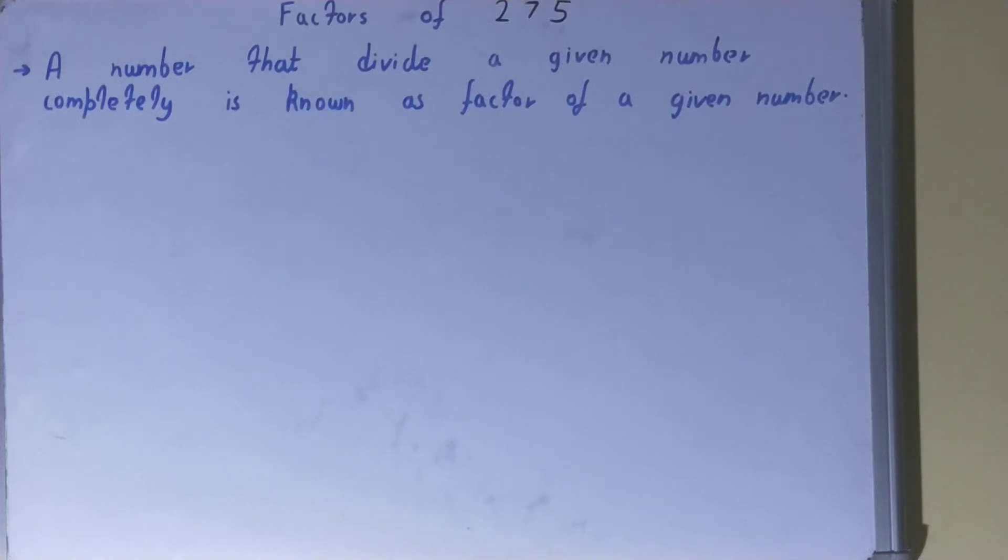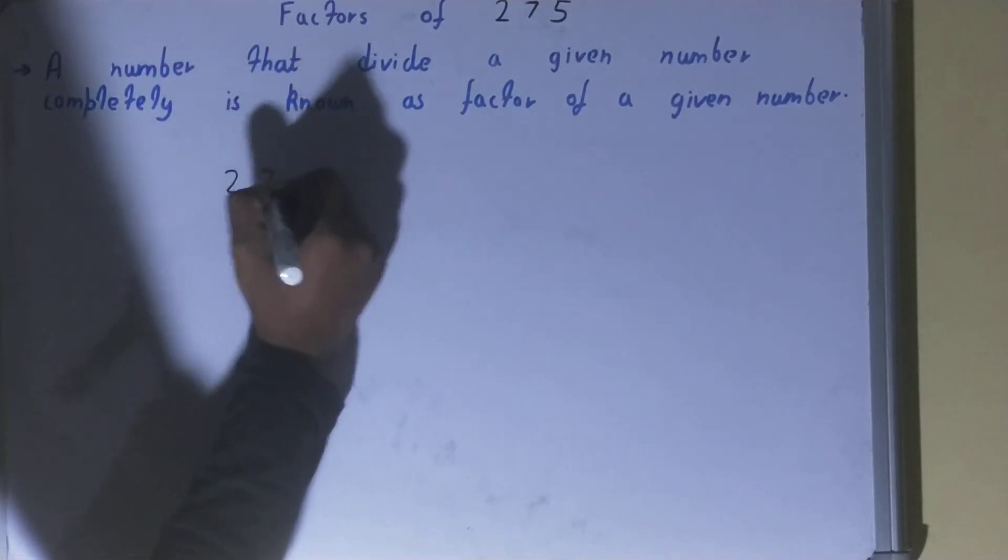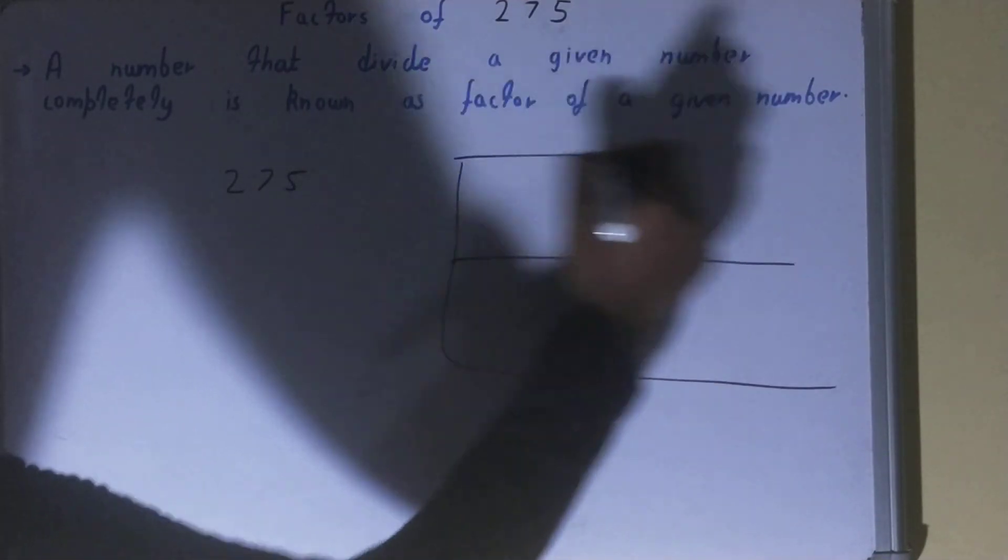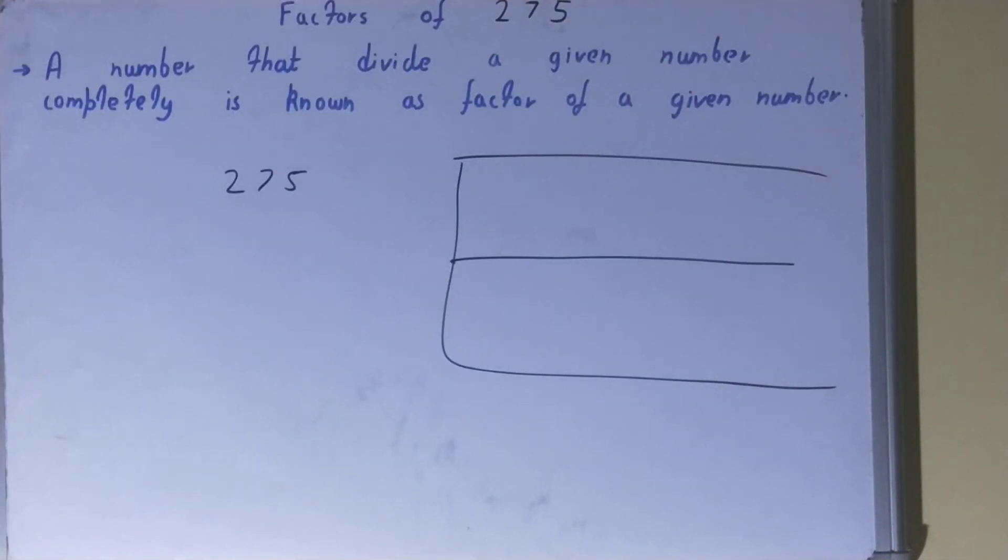Hello friends, and in this video I'll be helping you with the factors of the number 275. So let's start. To find it out you need to write the number like this and draw like this. Once you're done with that, you need to start with the lowest natural number.